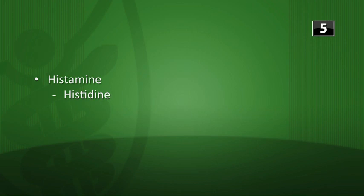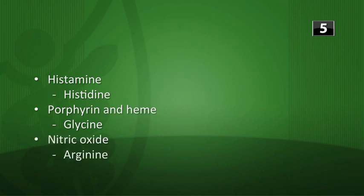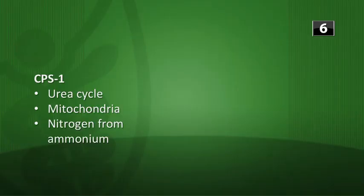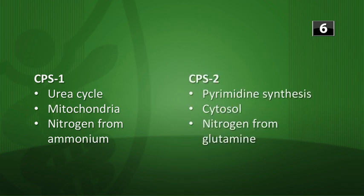Quiz review of amino acid precursors: histamine comes from histidine; porphyrin and heme come from glycine; nitric oxide comes from arginine; GABA comes from glutamate; S-adenosylmethionine comes from methionine; creatine comes from arginine. Comparing CPS1 and CPS2: CPS1 is part of the urea cycle, located in the mitochondria, gets nitrogen from ammonium; CPS2 is involved in pyrimidine synthesis, found in the cytosol, gets nitrogen from glutamine. That's the end of biochem 14.